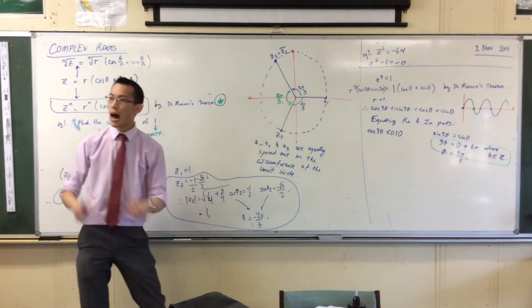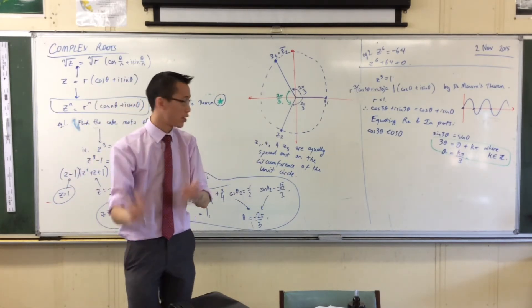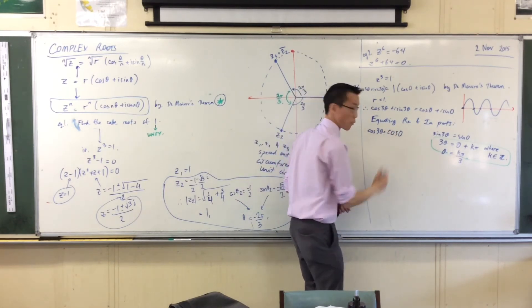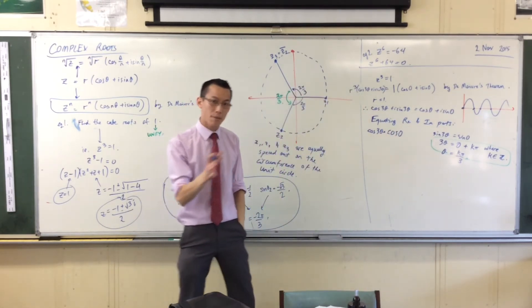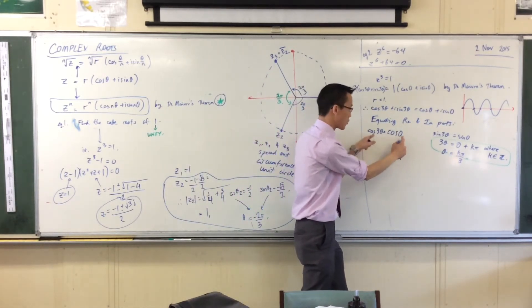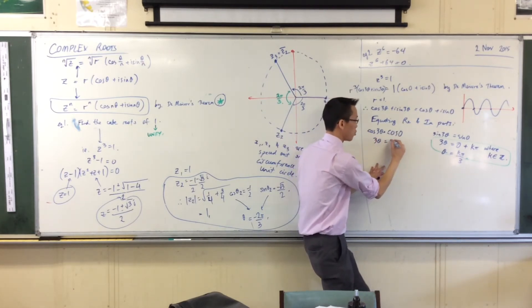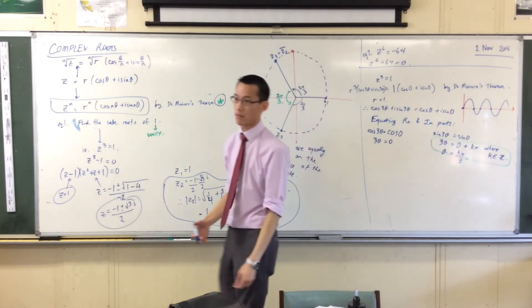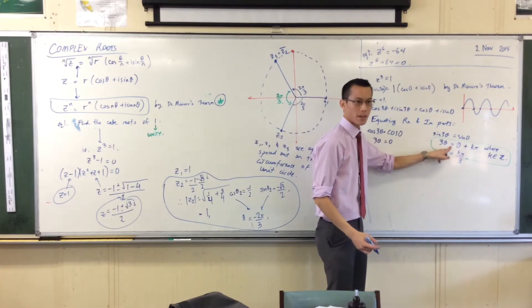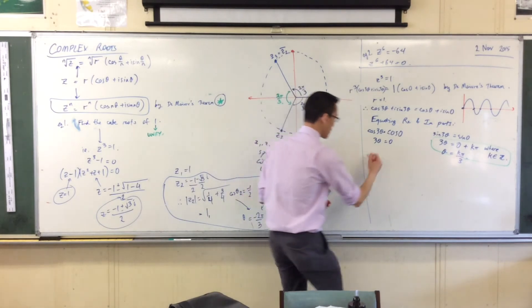This is not bad, but I need theta to satisfy not just one equation, I need both. Let's look at this. Just like before, one solution to cos something equals cos something else is where those two things are the same angle. So 3θ = 0 is a solution, that looks exactly the same as this.